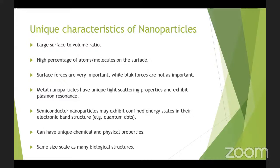Metal nanoparticles have a unique light scattering property and also exhibit something called plasmon resonance. This is what was going on in the previous example where we discussed different amounts of nanoparticles in different vials showing different colors of the same material. Semiconductor nanoparticles may exhibit confined energy states in their electronic band structure, and would also show different absorption properties due to these confined energy states.